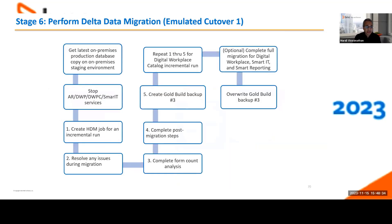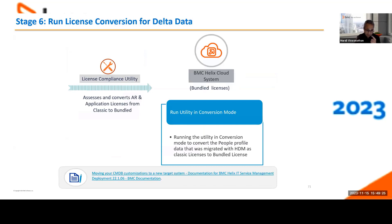For the emulated cutover, get the latest database copy from production, put it on staging DB, stop all services, and run an HTM job in incremental mode. Resolve any data migration issues, and repeat this for Digital Workplace Catalog. ITSM and Digital Workplace Catalog are the only two applications you need to run delta migration for — Smart IT and Smart Reporting have minimal data volumes and support full migration later in the cycle. Again, run the License Conversion Utility in conversion mode to convert any classic licenses in the newly brought people profile data to bundle licenses.